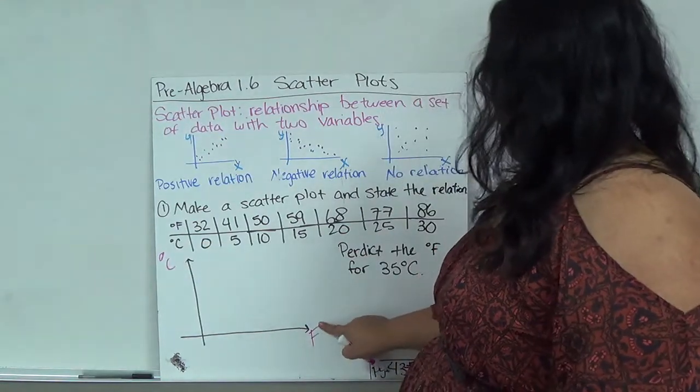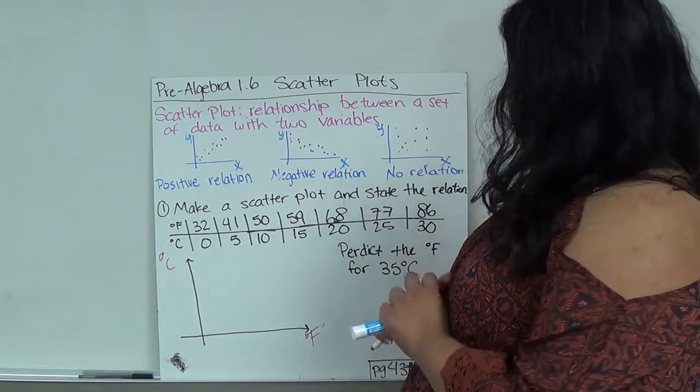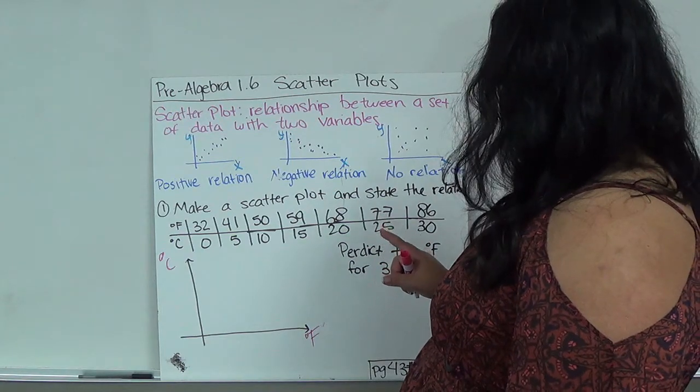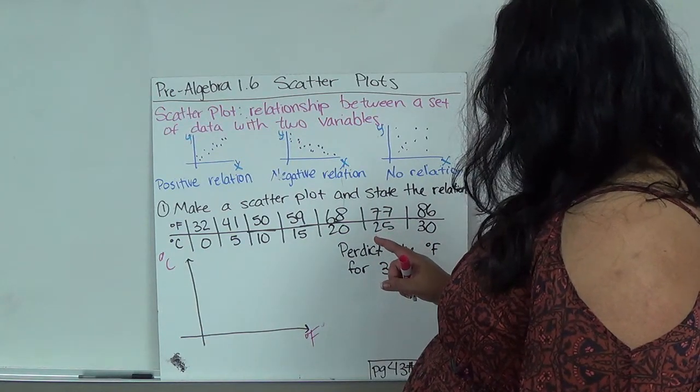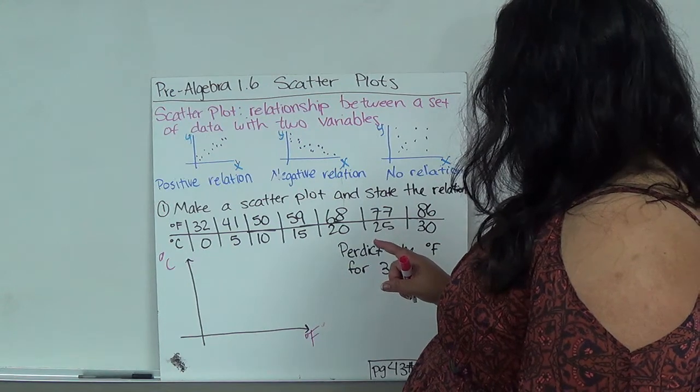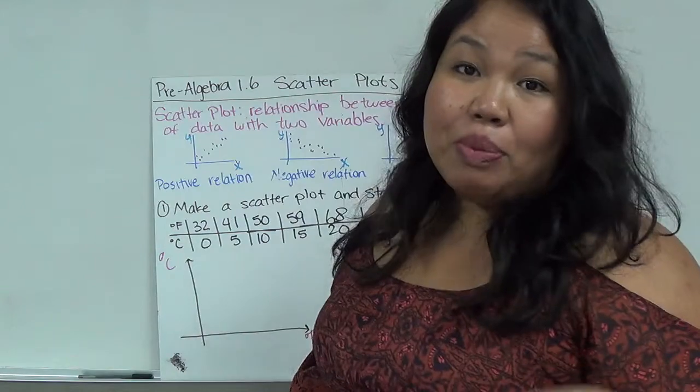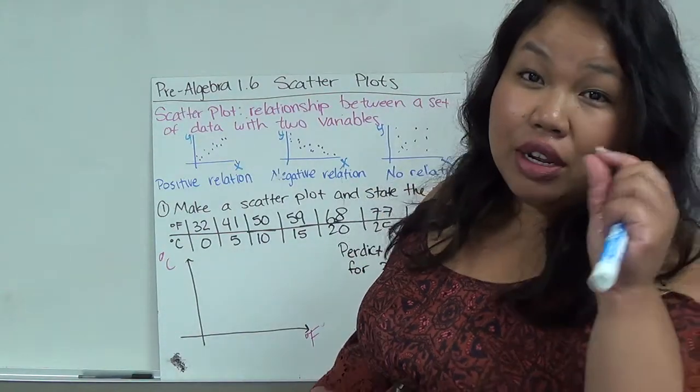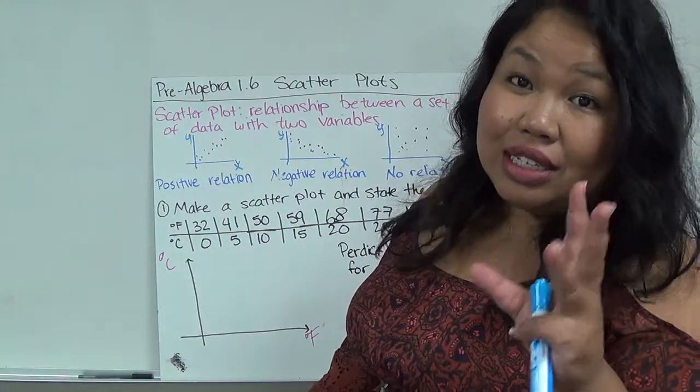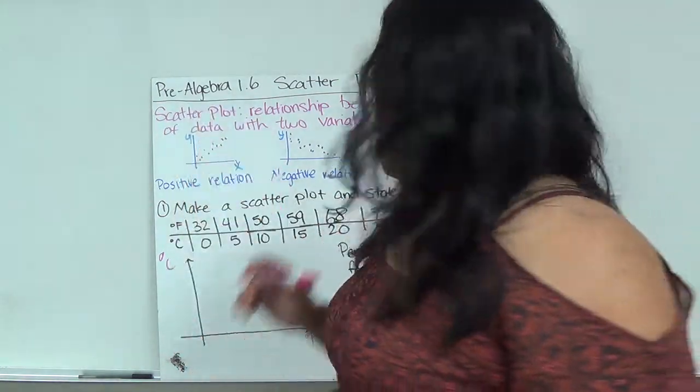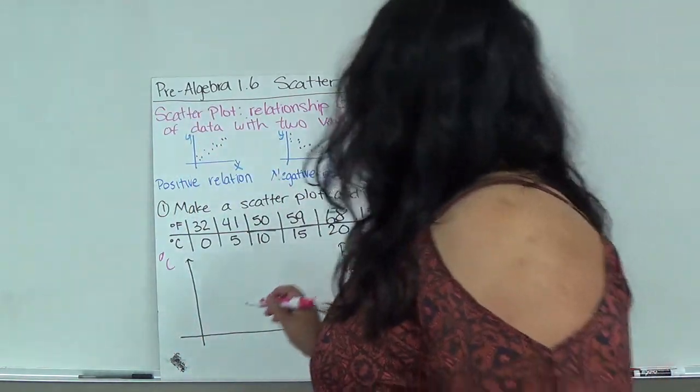So let's look at our F: 32, 41, 50. Let's go by 10. And if you're using graph paper it'll probably be easier to find more but if it's not exact it's fine. We're looking for the general idea - is it generally positive or generally negative correlation or no relation at all.